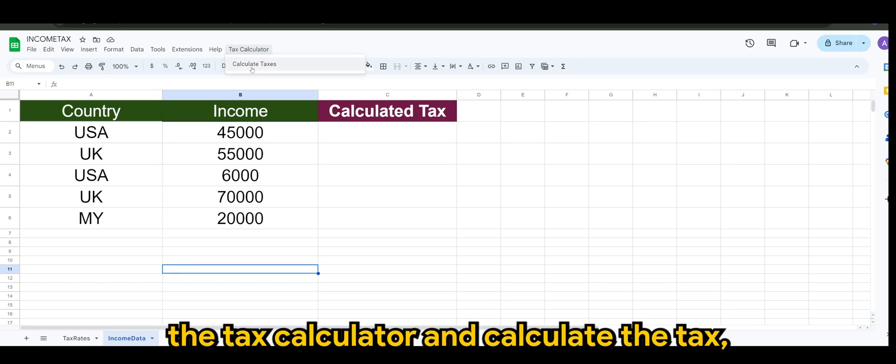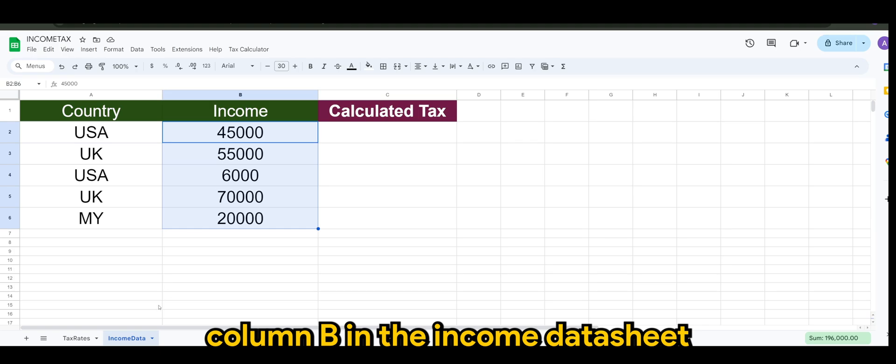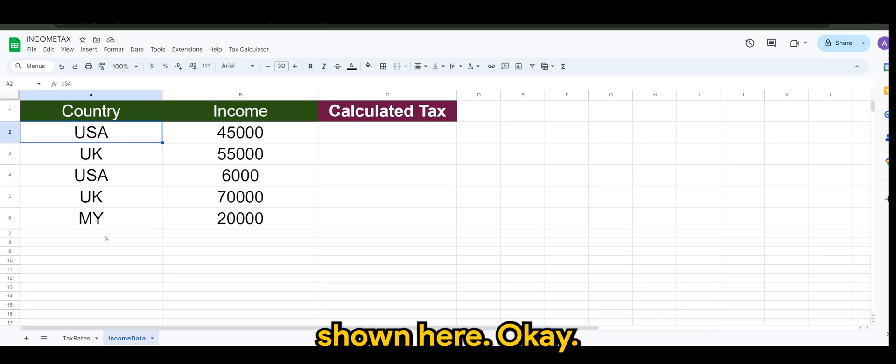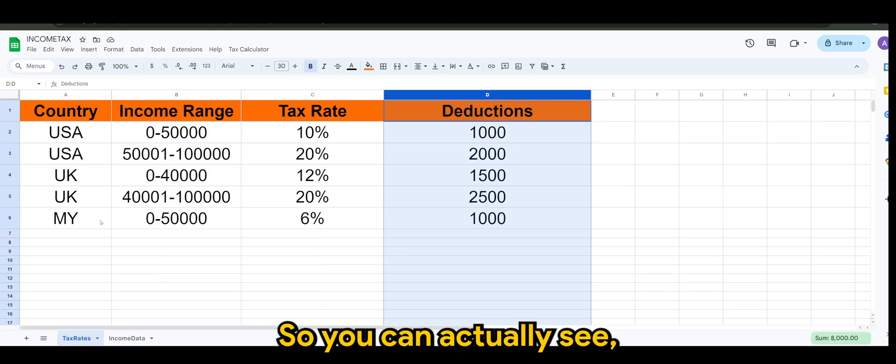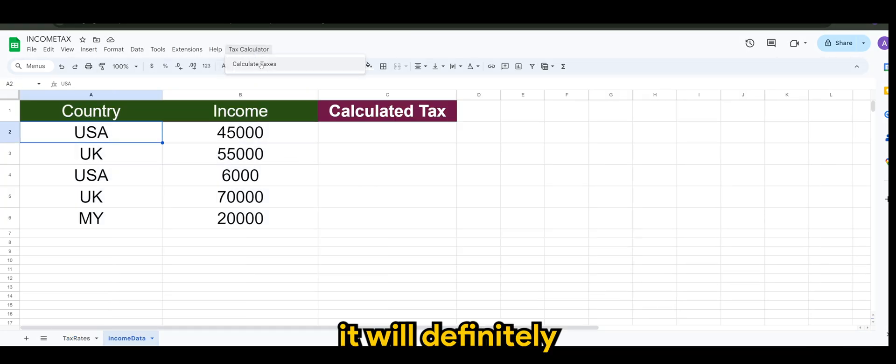Once you have run the script, you will immediately see a tax calculator option in your ribbon above. If I were to select the tax calculator and calculate the tax, it will basically refer to the income in column B in the income data sheet, and based on the country that's been shown here, you can actually see based on the settings that you have, it will definitely calculate based on that input.